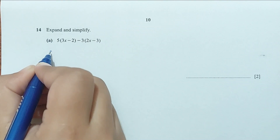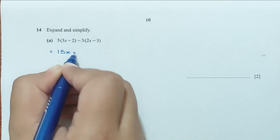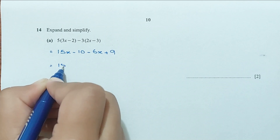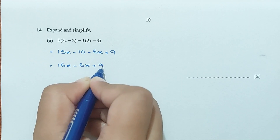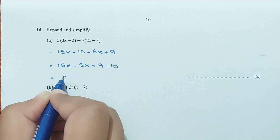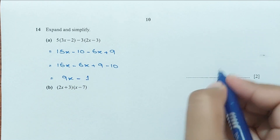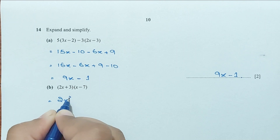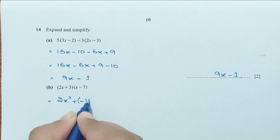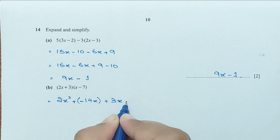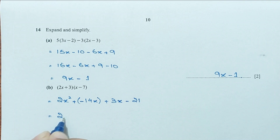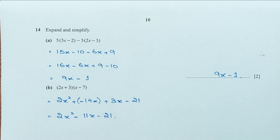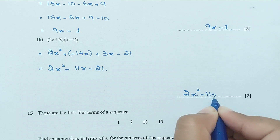Question 14 part A: expand and simplify 5(3x − 2) − 3(2x − 3). That gives 15x − 10 − 6x + 9 = 9x − 1. Part B: expand and simplify (2x + 3)(x − 7). That gives 2x² − 14x + 3x − 21 = 2x² − 11x − 21.